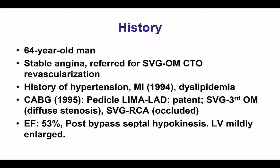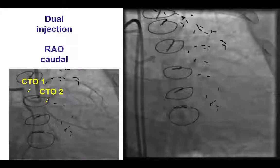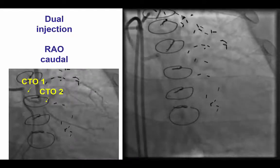The patient was a 64-year-old man with stable angina and previous coronary bypass, referred for a PCI of a CTO of a vein graft to the obtuse marginal branch. He had a patent LIMA to LAD and an occluded graft to the right coronary artery.